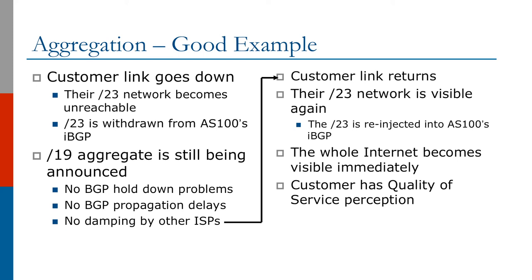So there are no BGP hold down problems or propagation delays, as well as no damping by other ISPs. When the customer link returns, their slash 23 network is visible again and re-injected into AS100's IBGP. The whole internet becomes visible immediately and the customer has quality of service perception.